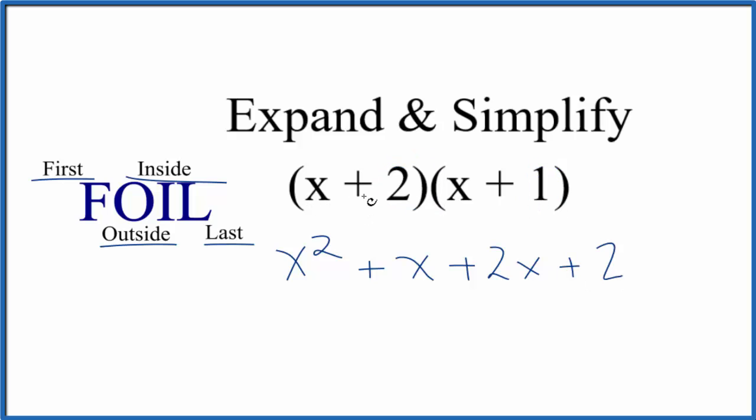So at this point, we've expanded x plus 2 times x plus 1. Now we need to simplify. So for x squared, there's only one x squared term, so we'll just put x squared there.